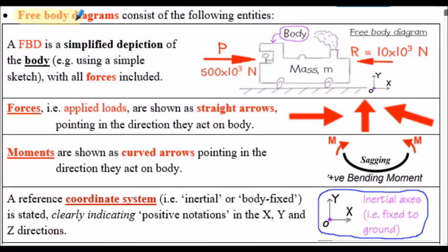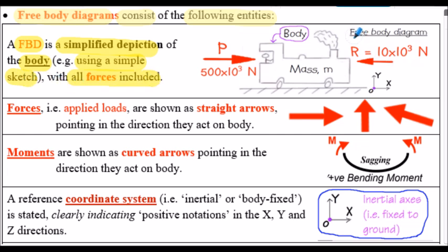Free-body diagrams can consist of the following entities. Firstly, a free-body diagram is a simplified depiction of a body using a simple sketch with all the forces included. In the free-body diagram shown here, our body is our train. We have force P applied to the train causing its motion, and force R resisting the motion — those are the two forces applied to the body.